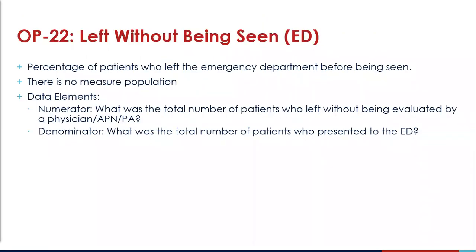Lastly is OP22, which looks at the percentage of patients who left the emergency department before being seen. There is no measure population for this measure, as you will include anyone who left prior to being seen. The numerator and denominator are: the total number of patients who left without being evaluated by a physician or advanced practitioner over the total number of patients who presented to the ED. There are no data elements for this measure as it will be reported as a number.